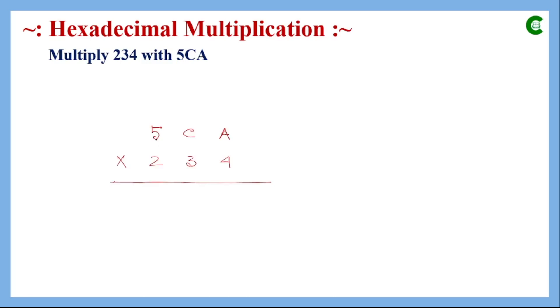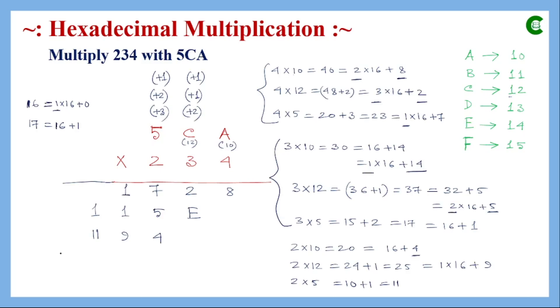Next we multiply two three-digit hexadecimal numbers: 5CA multiplied by 234. We will have three rounds of partial products which will be added to get the final product. Starting multiplication with 4, using the hex digit mapping.